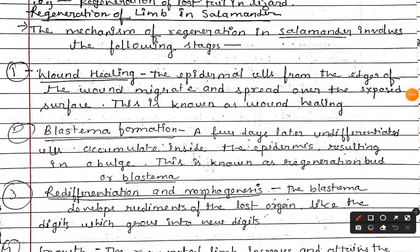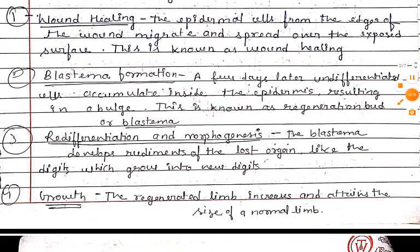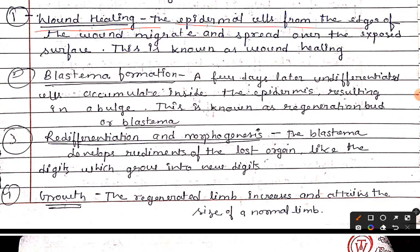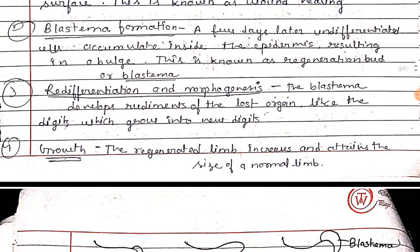The mechanism of epimorphic regeneration begins with wound healing. The epidermis cells migrate over the wound surface — this is known as wound healing. Next is blastema formation: a few days later, undifferentiated cells accumulate inside the epidermis, resulting in a bulge, which is known as a regeneration bud or blastema.